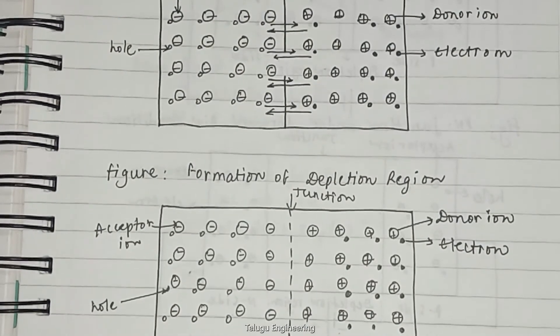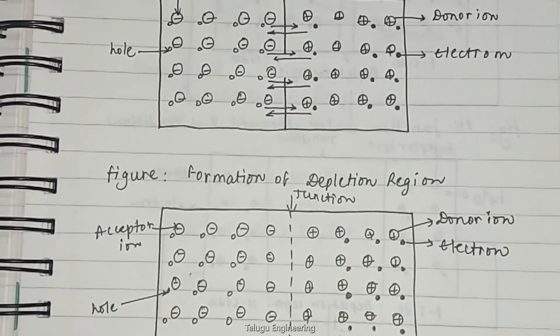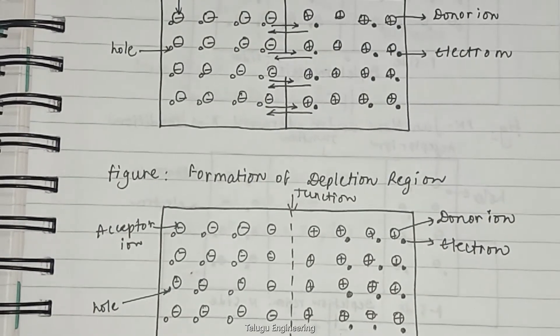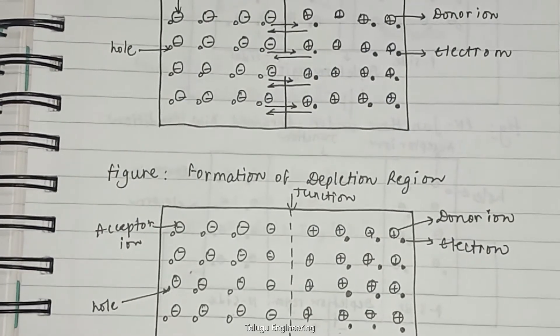In other words, a positive potential is developed on the N side and negative potential is developed on the P side. These potentials prevent the further flow of holes from P to N and electrons from N to P side. This potential is known as barrier potential or contact potential.